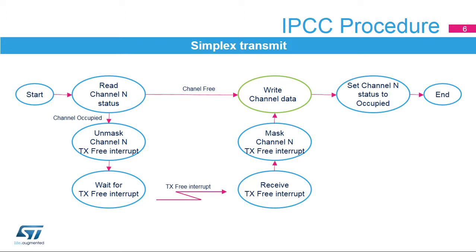The simplex procedure allows the transfer of a message from a sending side to a receiving side via a dedicated channel. To transmit a message, the channel status flag is checked. When the channel status flag indicates channel-occupied, or flow-off — due to the receiving side not having freed the channel data buffer from a previous message — the channel-free interrupt is unmasked. Once the channel is freed by the receiving side, a channel-free interrupt, or flow-on, is generated. When the channel-free interrupt is generated, it is masked and the message can be written in the channel data buffer. Subsequently, the channel status flag is set to occupied, which triggers a channel-occupied interrupt for the receiving side.